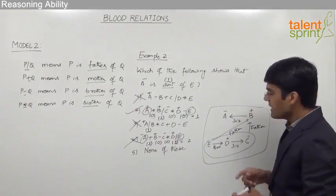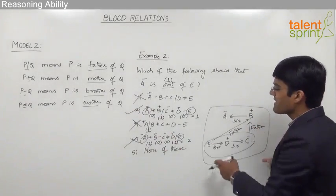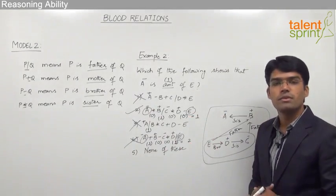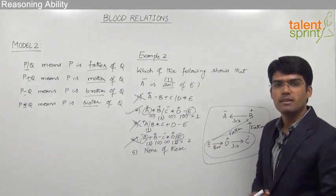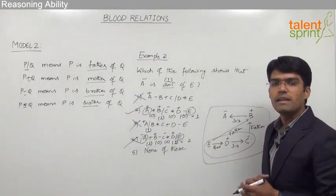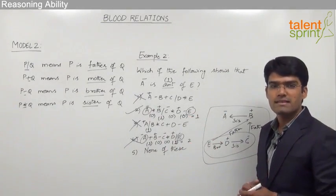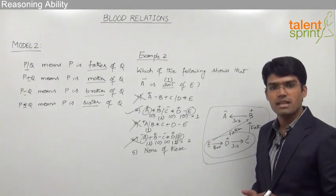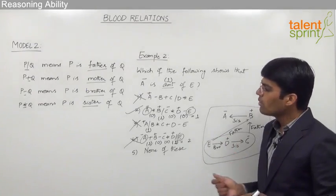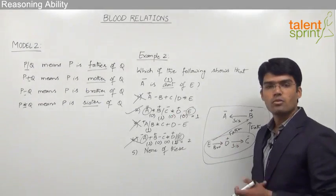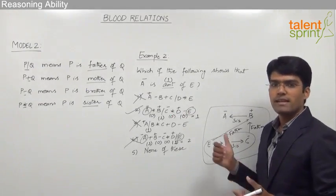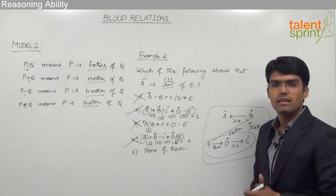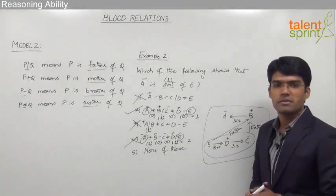Remember, if you try to construct a family tree for all given options, it will take a long time. So first eliminate wrong answers using gender and generation gap, and then only for the remaining options, construct the tree to verify whether the given relationship is correct or not.